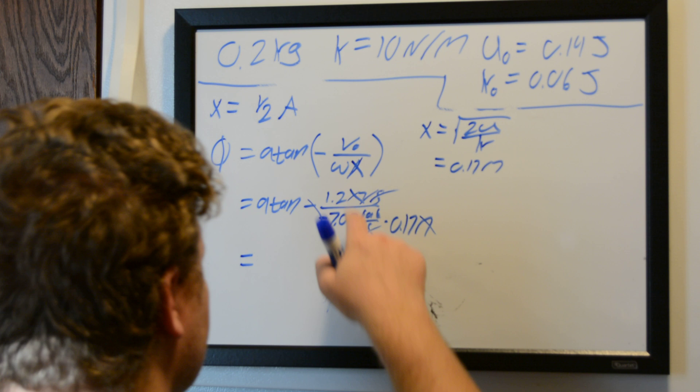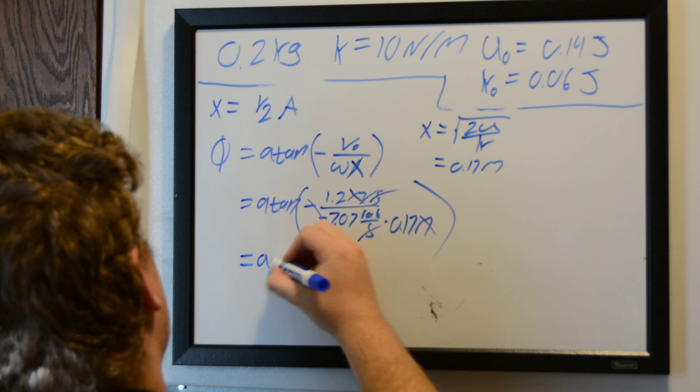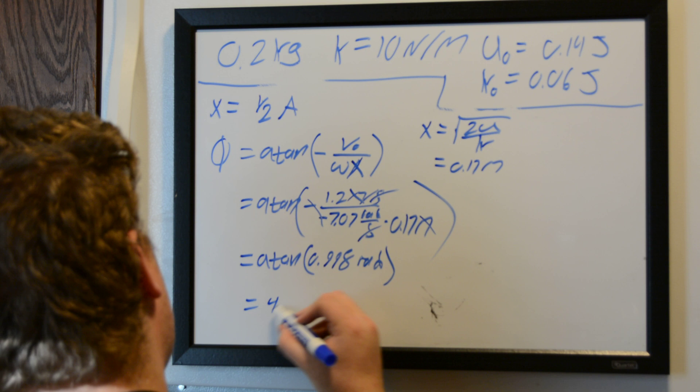And then we just have that this value inside of the arctangent is going to be in radians, which is what we're looking for. So this is going to be arctangent of 0.998 radians. And that's going to come out to be 45 degrees is our phase angle.